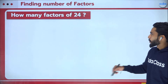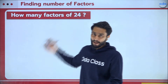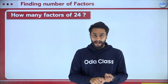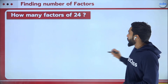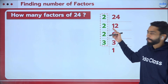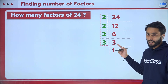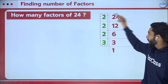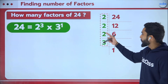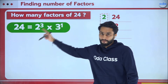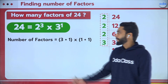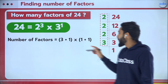Let's verify with 24. We already found 24 has 8 factors. Prime factorization: 24÷2=12, ÷2=6, ÷2=3, ÷3=1. So 24 = 2^3 × 3^1. Number of factors = (3+1) × (1+1) = 4 × 2 = 8. Correct — this matches the 8 unique factors we found earlier: 1, 2, 3, 4, 6, 8, 12, 24.